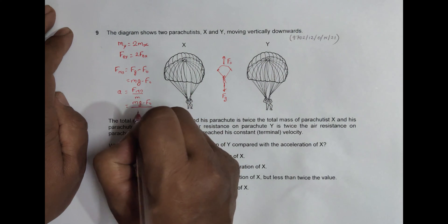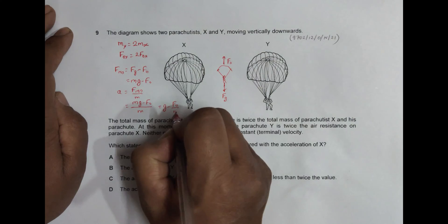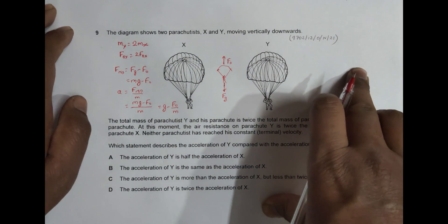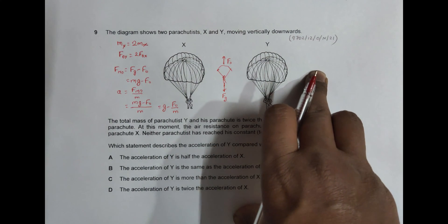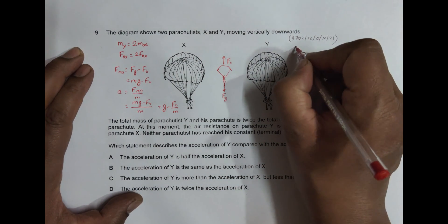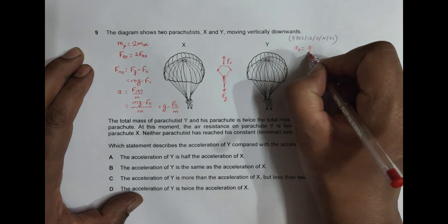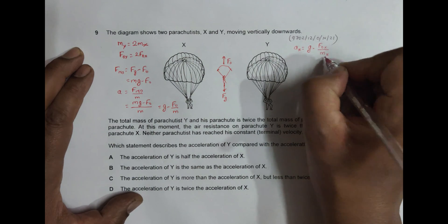This means the acceleration equals F resultant divided by mass, which equals mg minus Fo divided by m, and that simplifies to g minus Fo over m. For parachutist X: acceleration of X equals g minus Fox divided by mass of X.